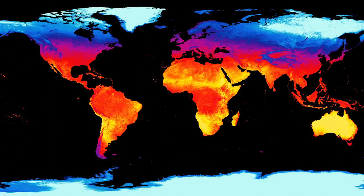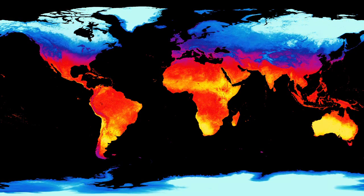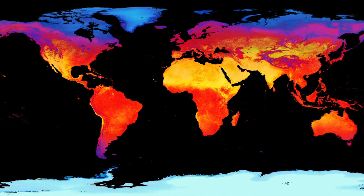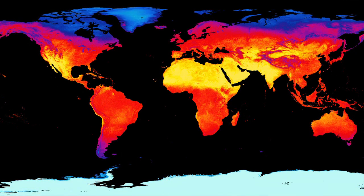We used a variety of satellite data, both land surface temperature data from MODIS and also impervious surface data from the Landsat satellite. Impervious surface data essentially tells us how much building material is on the land surface, in order to study the urban heat island.